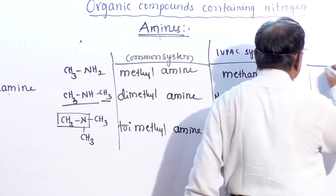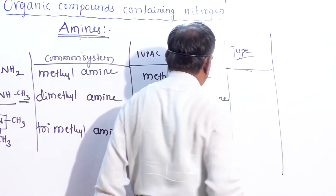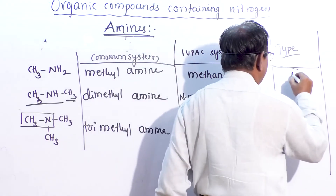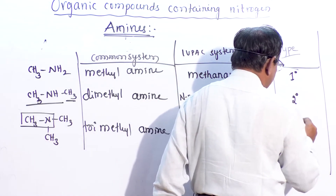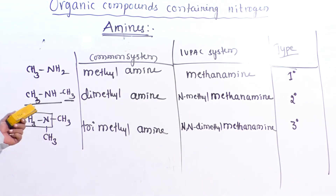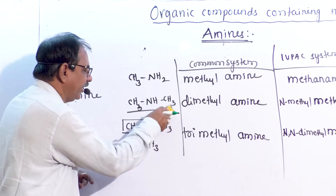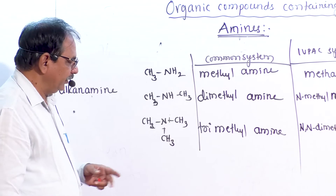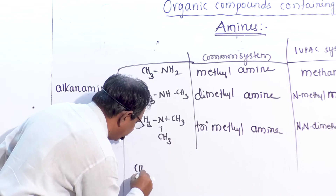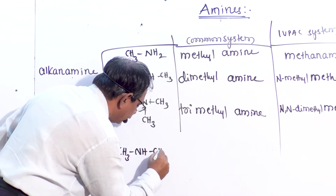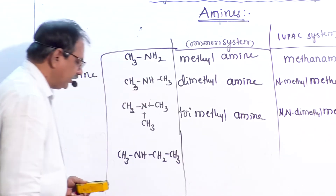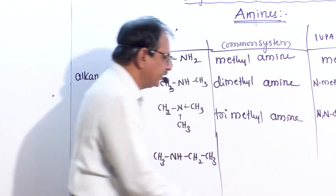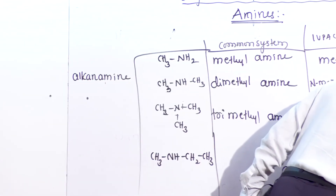In CH3NHCH2CH3, two hydrogen atoms of ammonia are replaced by two different alkyl groups — methyl and ethyl — so it is an example of a secondary amine. In the common system, since both groups are different, the prefix 'di' is not used; both groups are named individually.